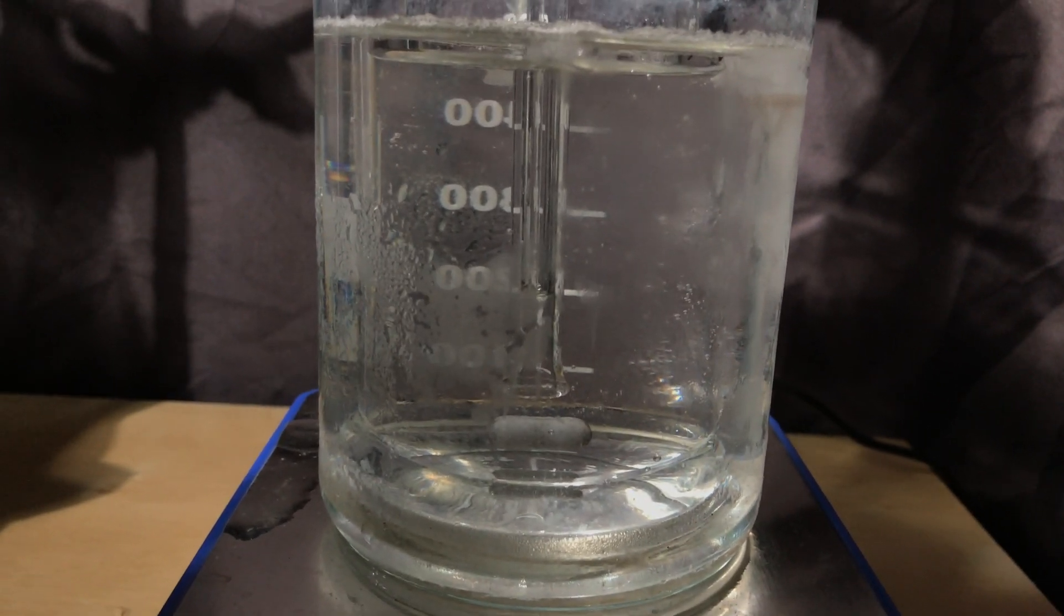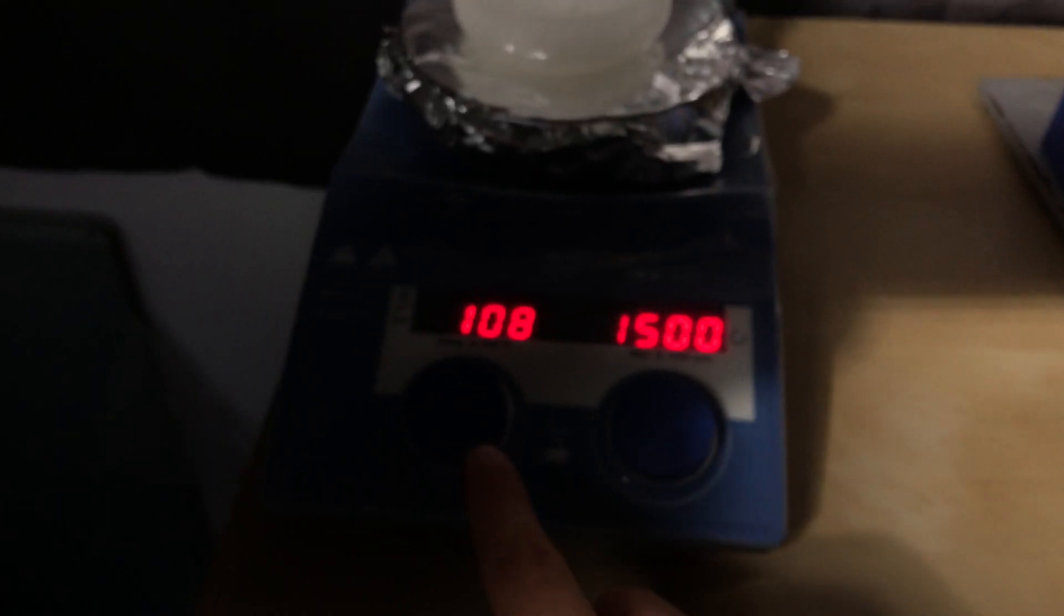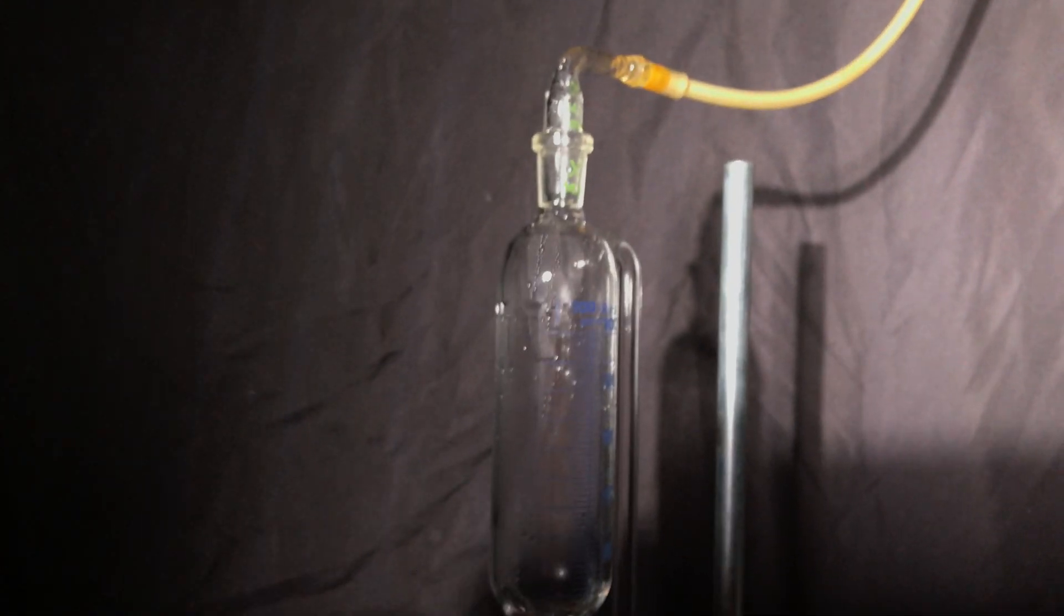You can see this right here. The liquid is slowly being sucked into the apparatus. Now we turned off the hot plate because we don't want any further dimethylamine to be produced and remove the hose.